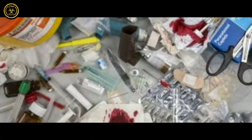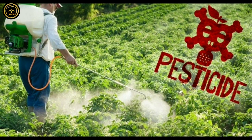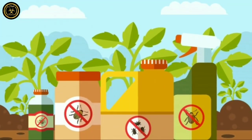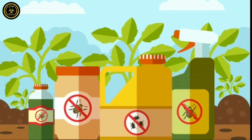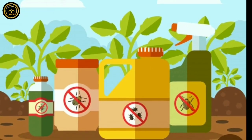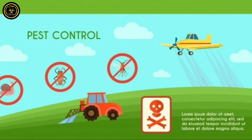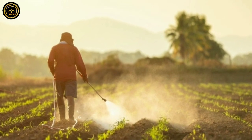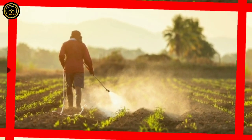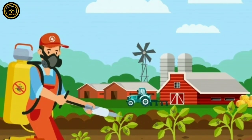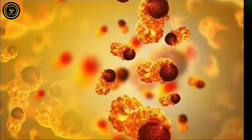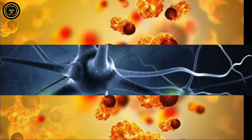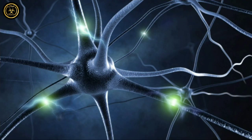Pesticides are chemical components used against fungi and other pests. They can remove bacteria and penetrate soil. Bacteria removal can affect groundwater sources.